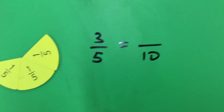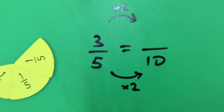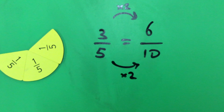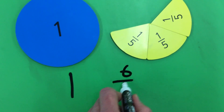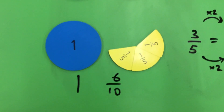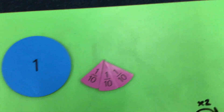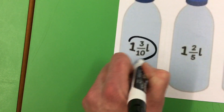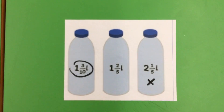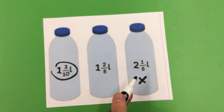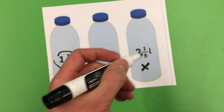To compare one and three tenths with one and two fifths, convert to equivalent fractions with the same denominator. Three fifths — multiply both numerator and denominator by two — gives six tenths. So one and two fifths equals one and six tenths. One and six tenths is greater than one and three tenths, so the bottle with one and three tenths has the least water. In descending order: two and one fifth, then one and two fifths, then one and three tenths.